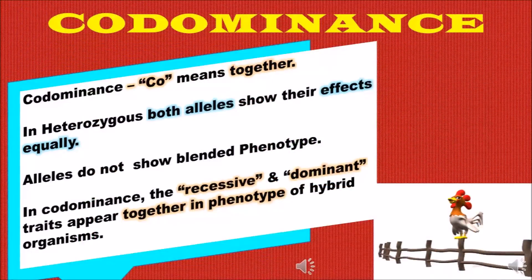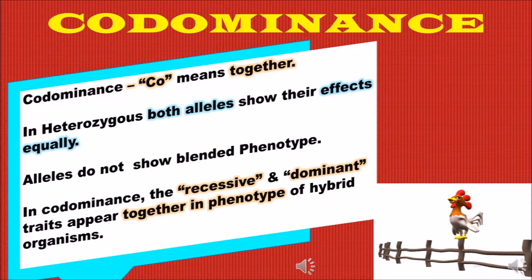Co-dominance: 'co' means together, that is both alleles will express together and show their effects equally. In co-dominance, alleles do not show a blended phenotype; both recessive and dominant traits appear together in the phenotype of hybrid organisms.